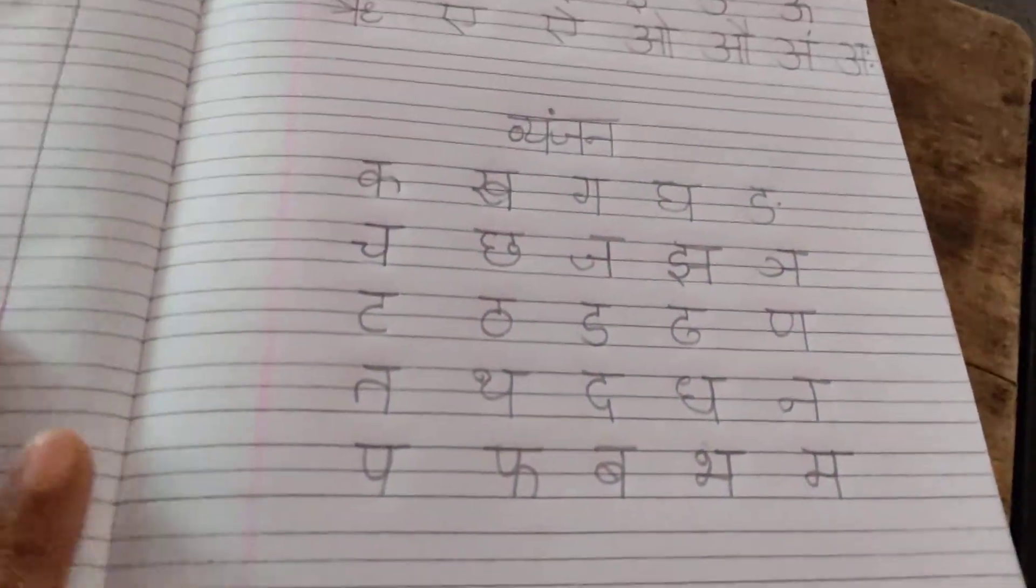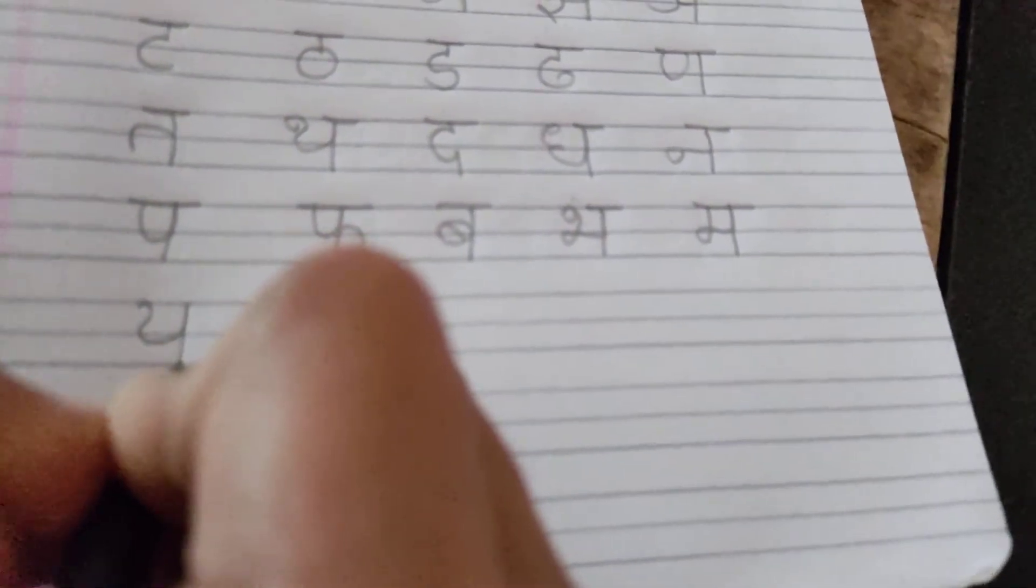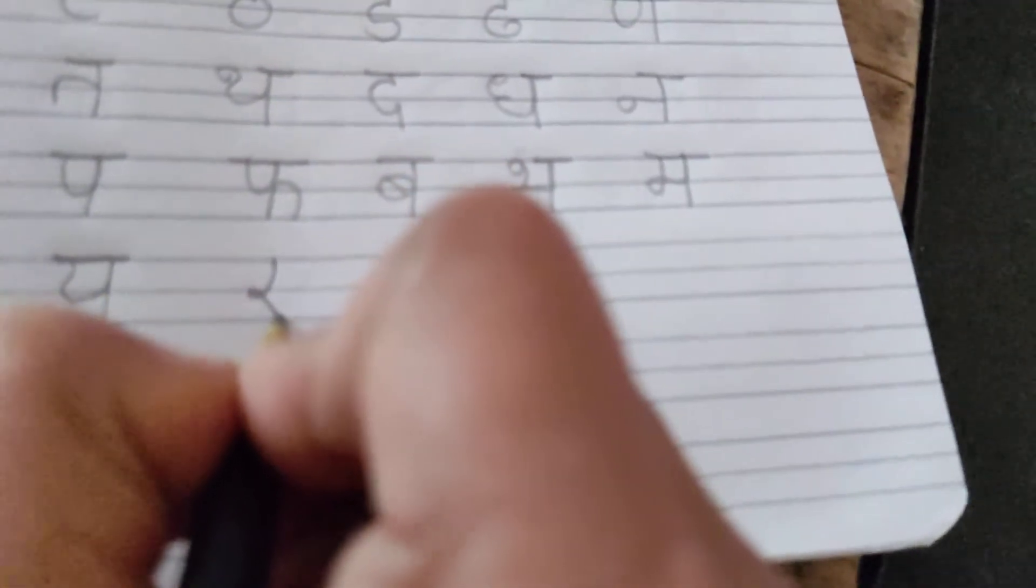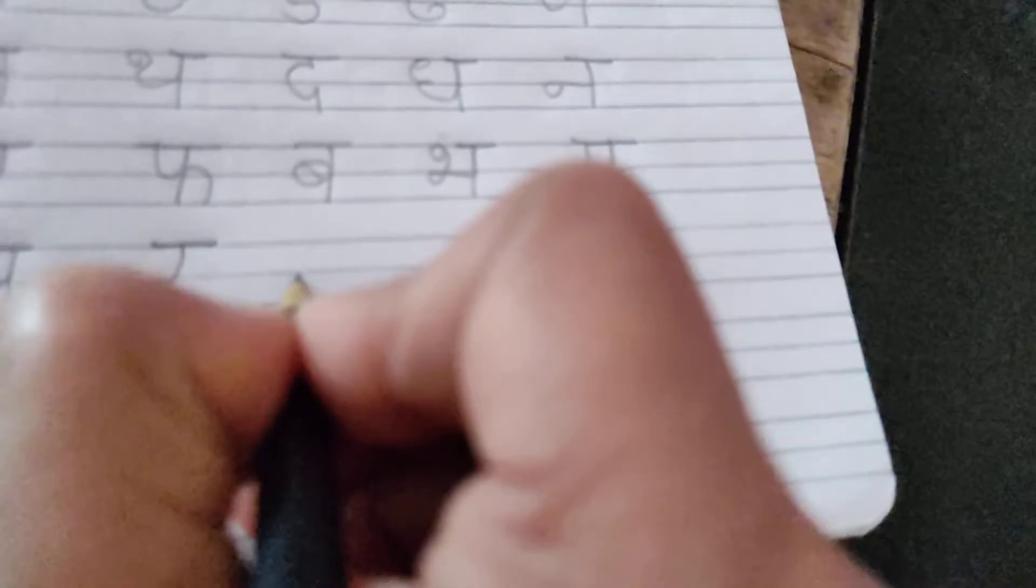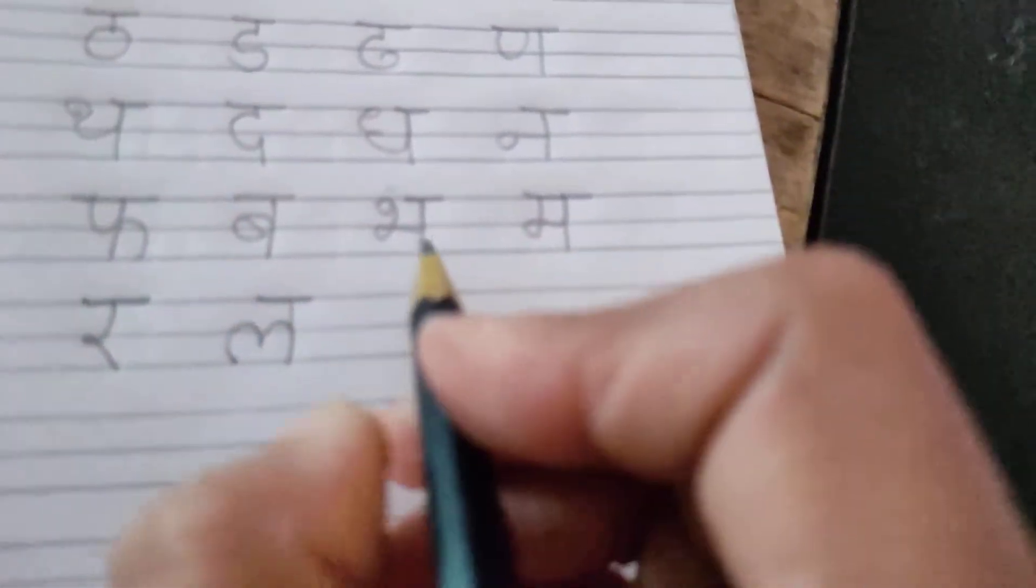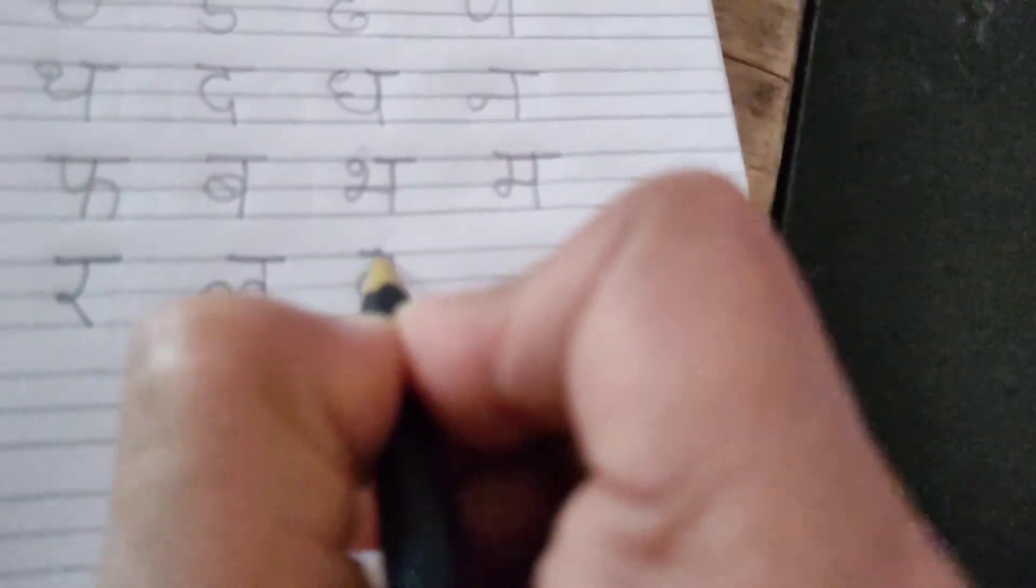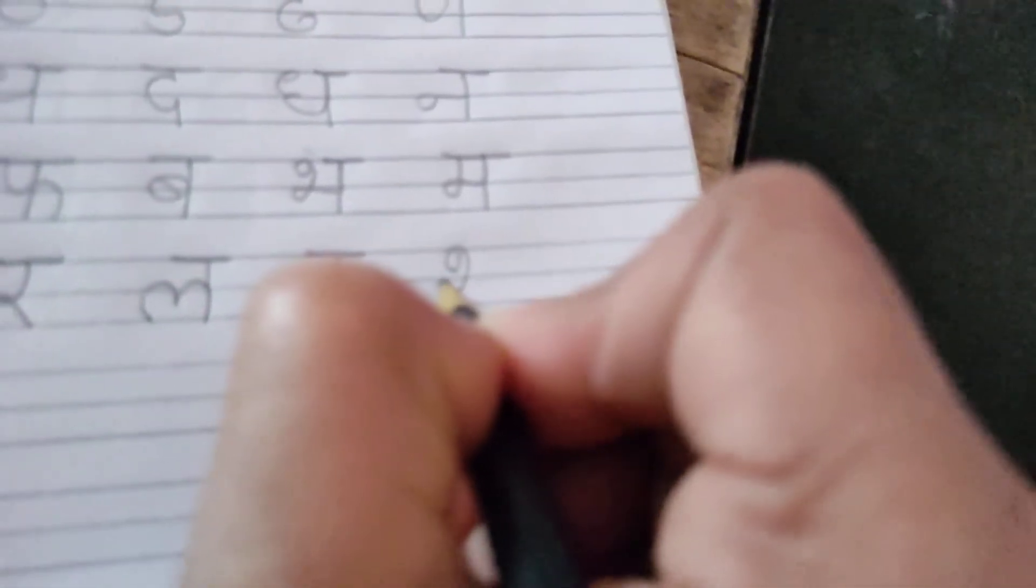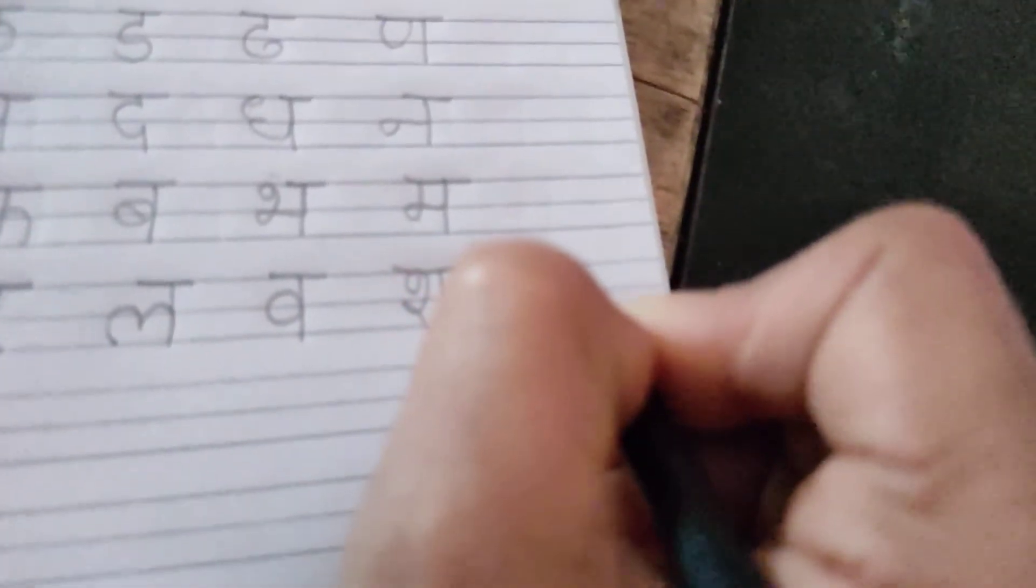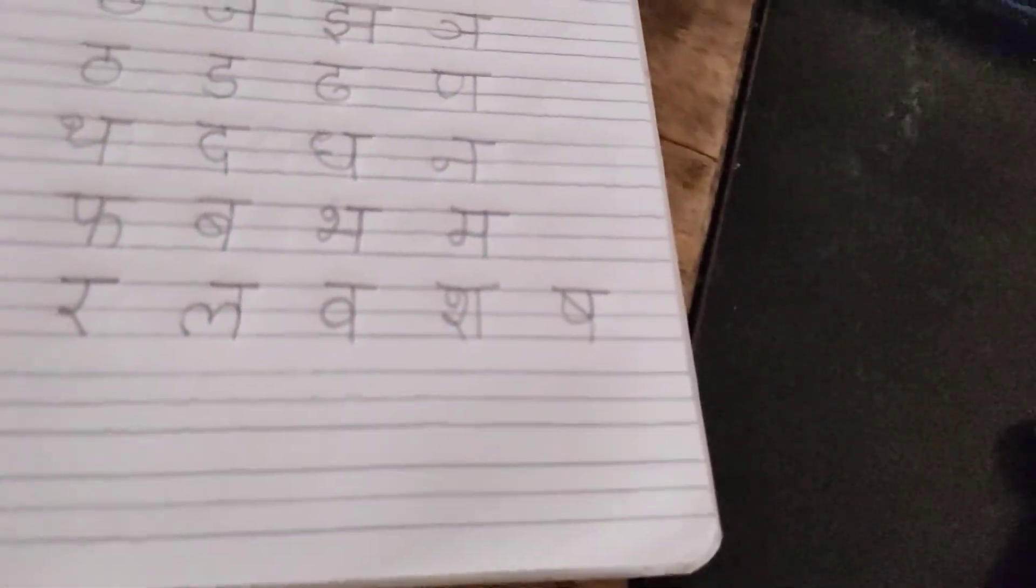Next page. Six letters we will write. YA say YATI, YADNYA. RA say RATAT. LA say LASOON. VA say VATA. SHA say SHARBAT. SHA say SHATBHUJA. Okay.